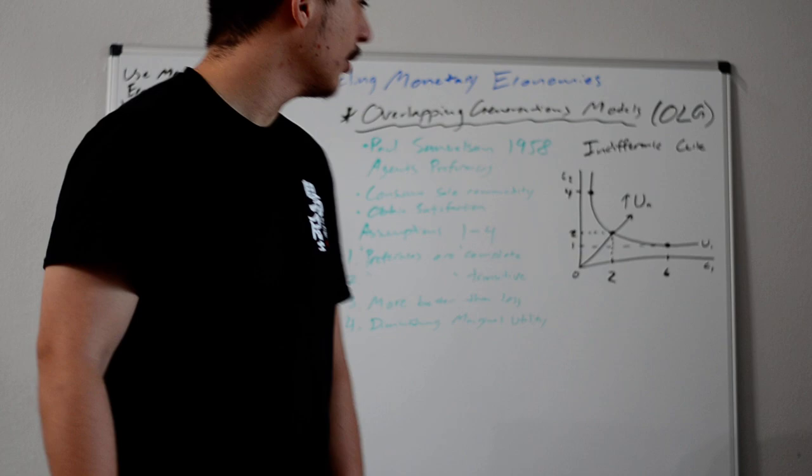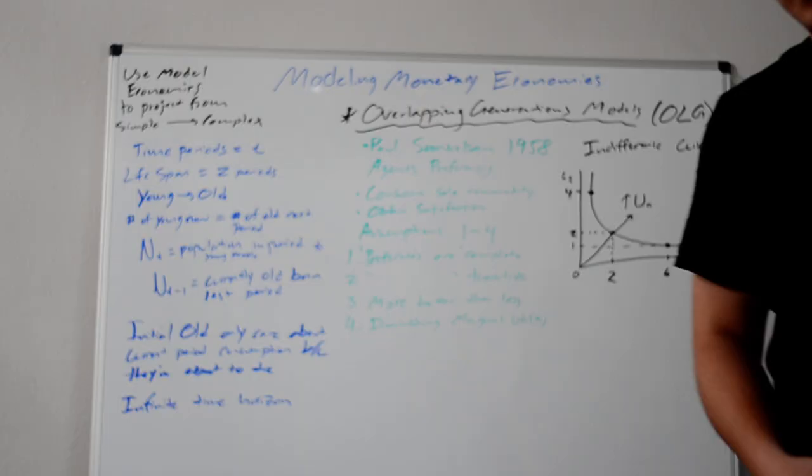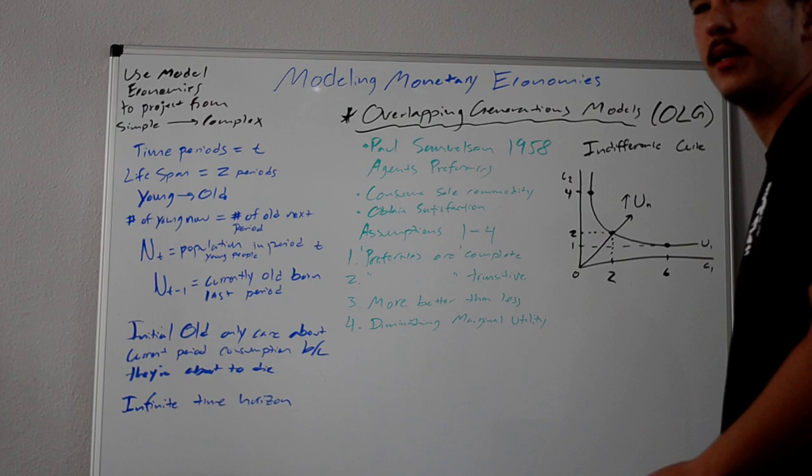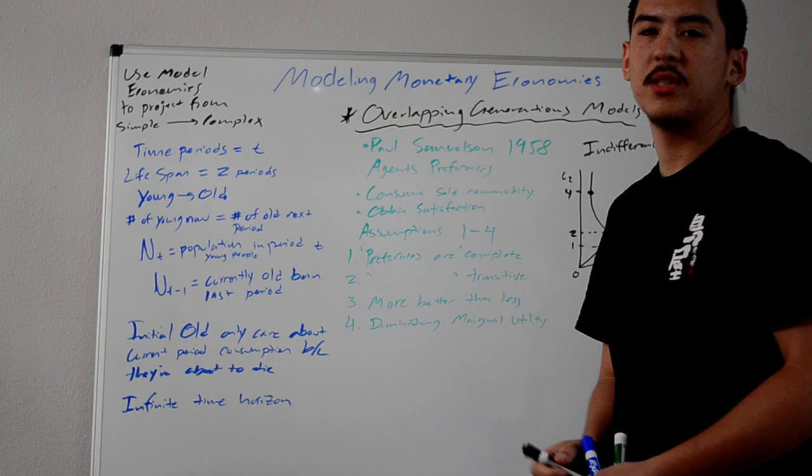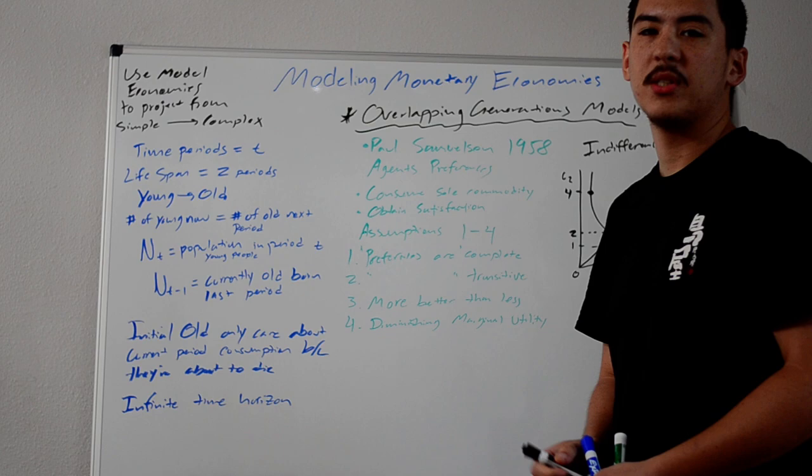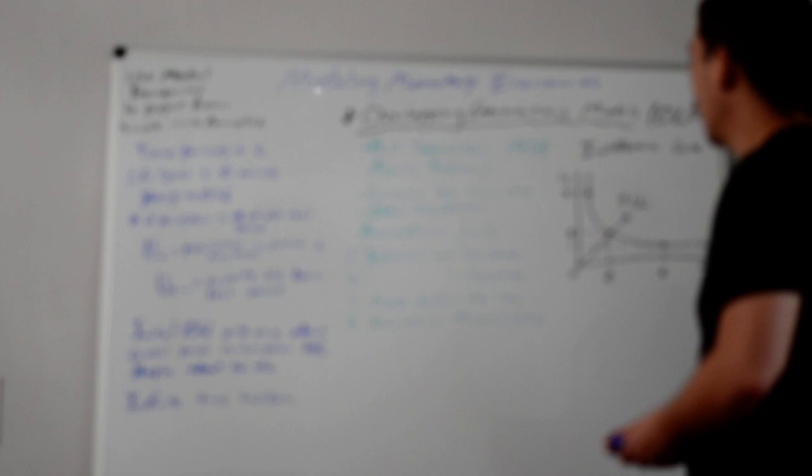What I have here is all the assumptions, axioms, and basic knowledge you have to understand before you can get started in analyzing overlapping generations models. They were first developed by Paul Samuelson in 1958. He worked with these extensively. There is a good amount in the textbook and various other sources you can research.